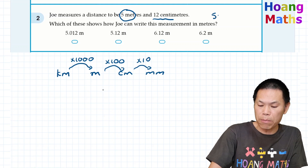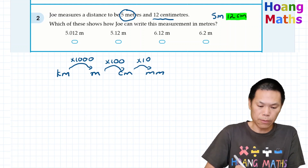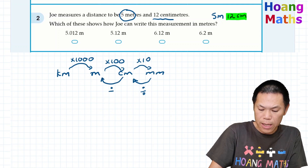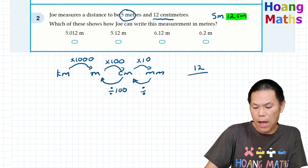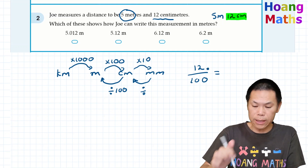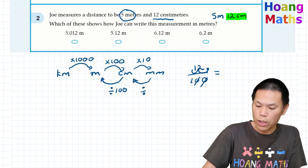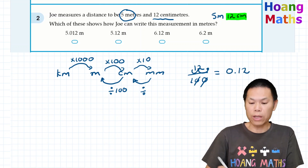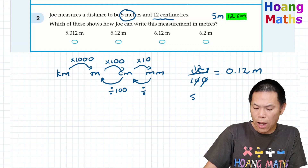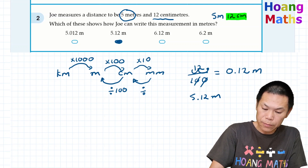We need to convert centimeters into meters because we already have 5 meters. The measurement is 5 meters and 12 centimeters. To convert centimeters to meters, we divide by 100. So 12 divided by 100 — the decimal point moves two places to the left — gives us 0.12. So that is 0.12 meters. Therefore, we have 5 meters and 0.12 meters, which is 5.12 meters. So the answer is 5.12.